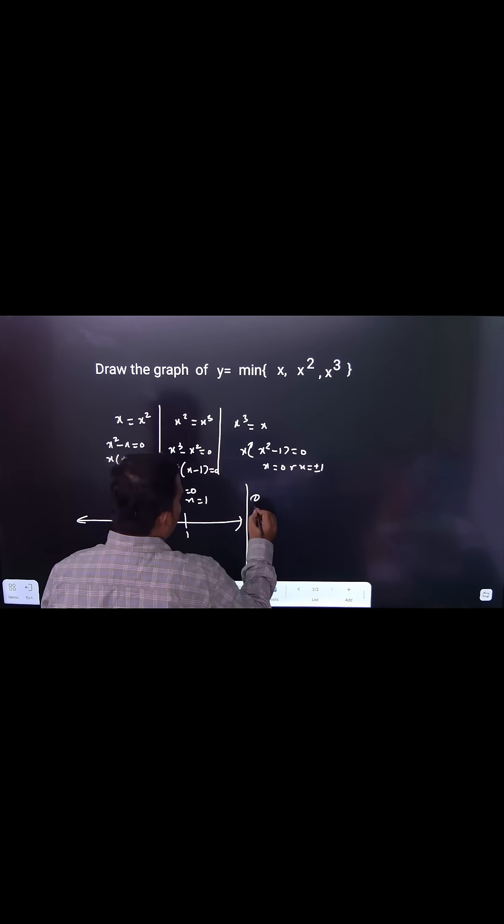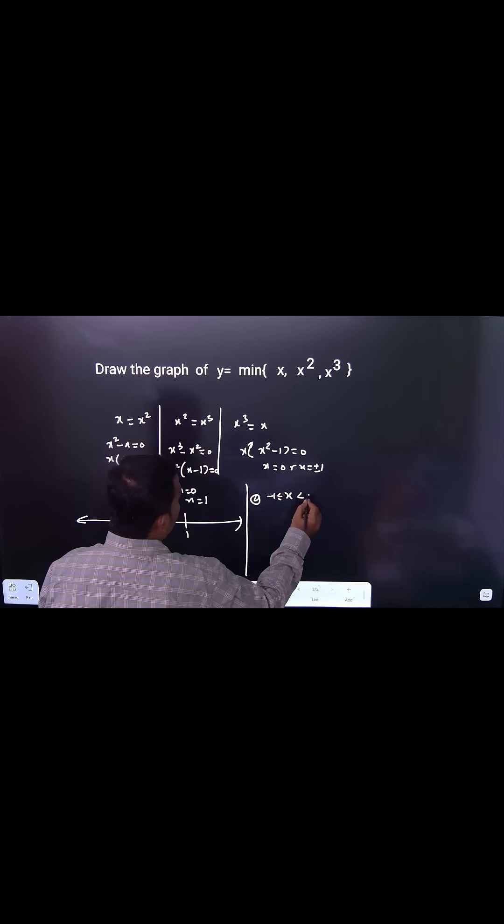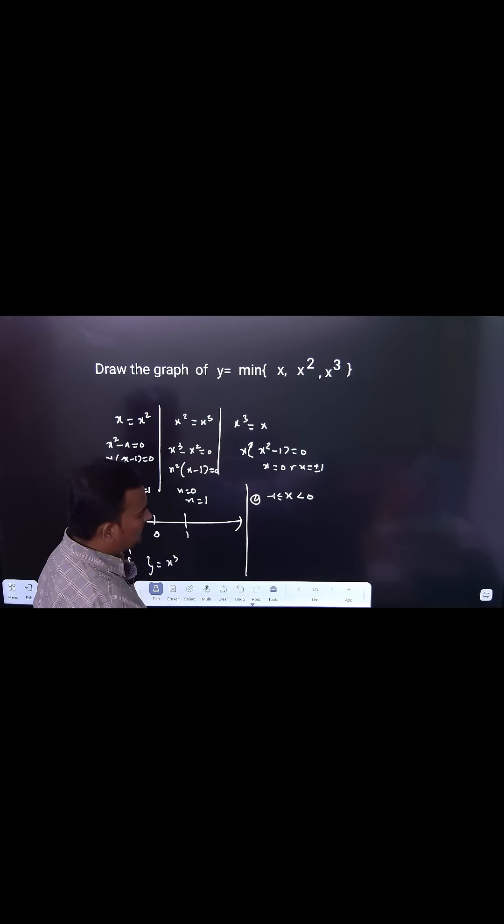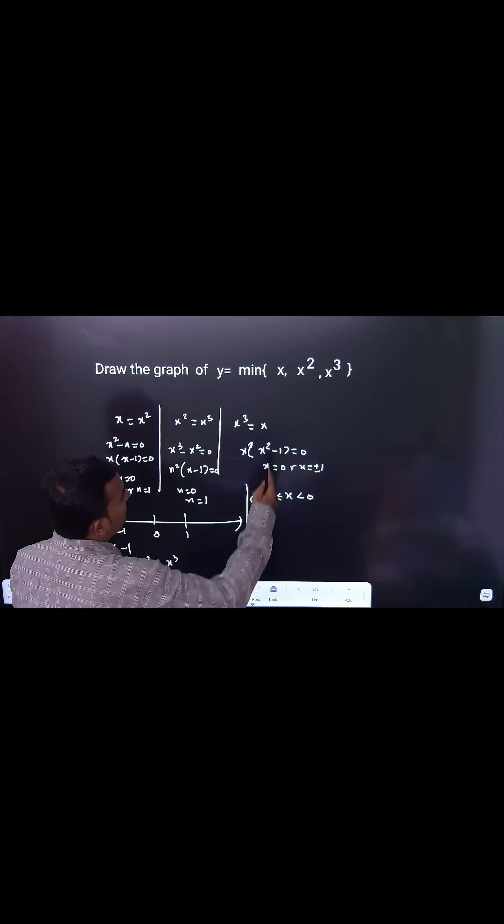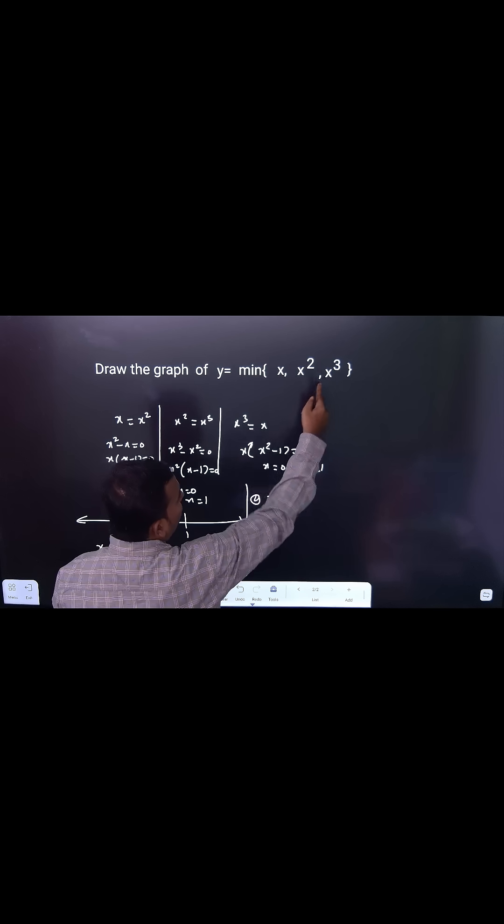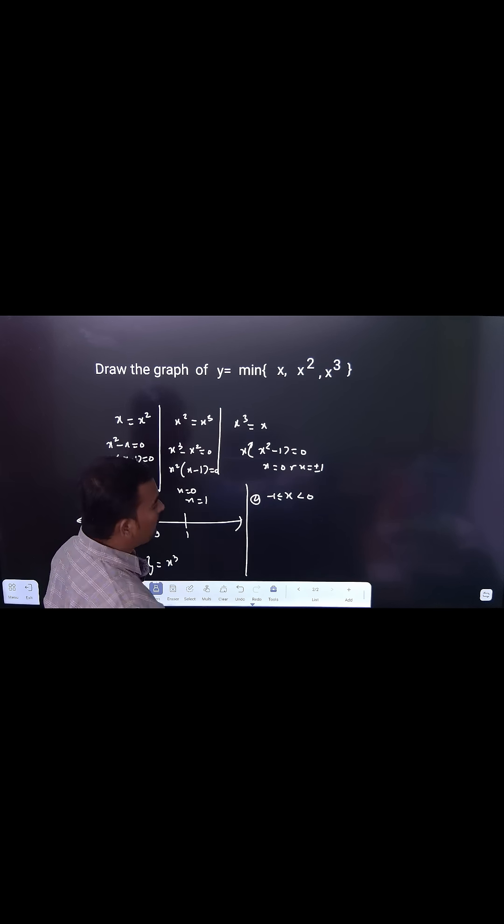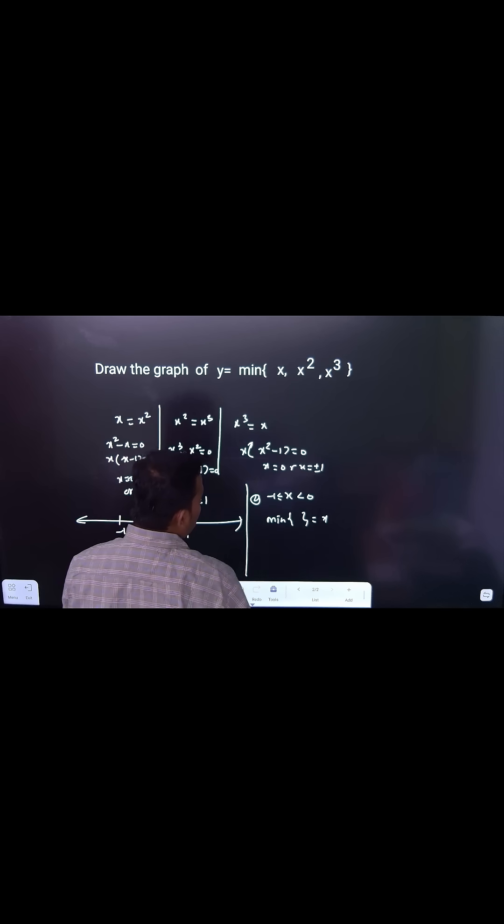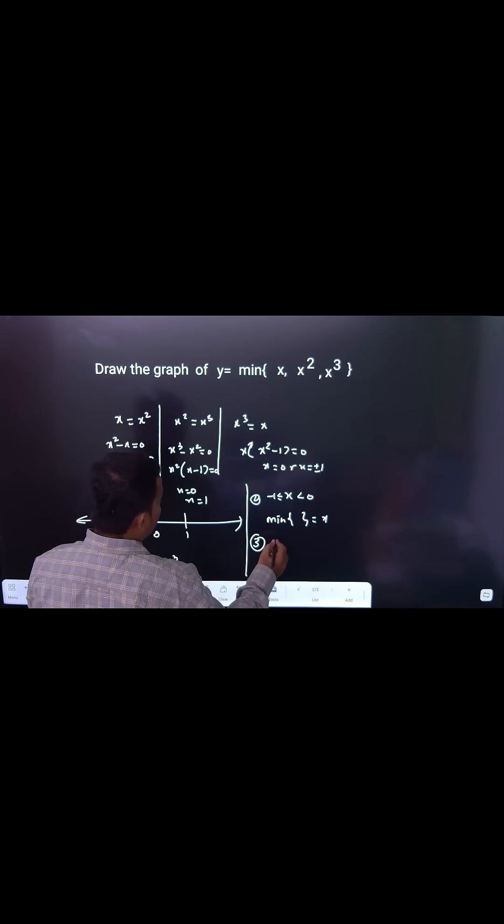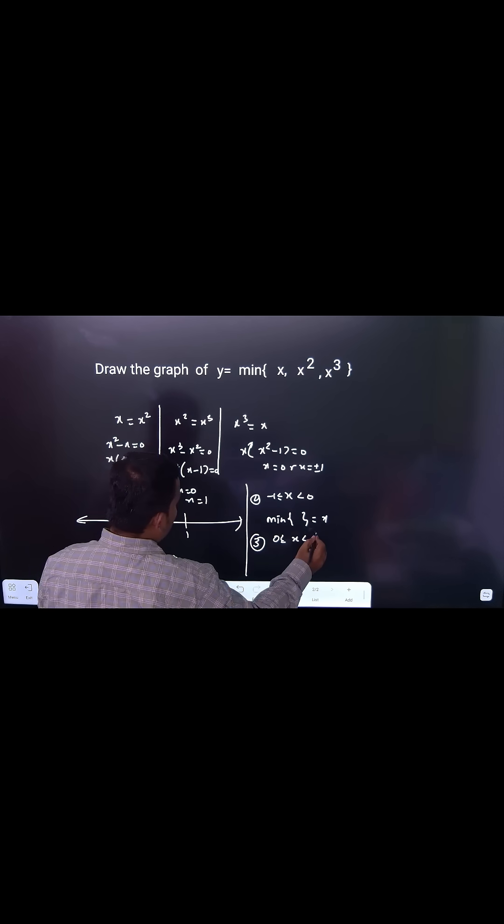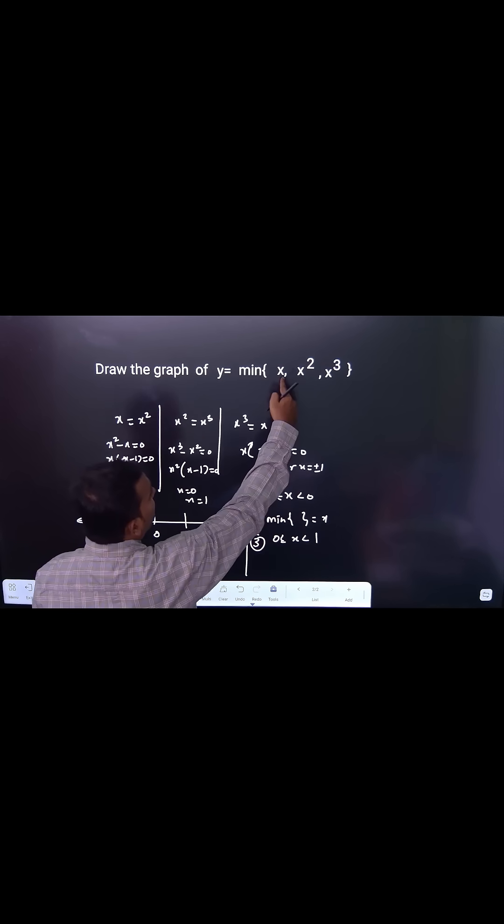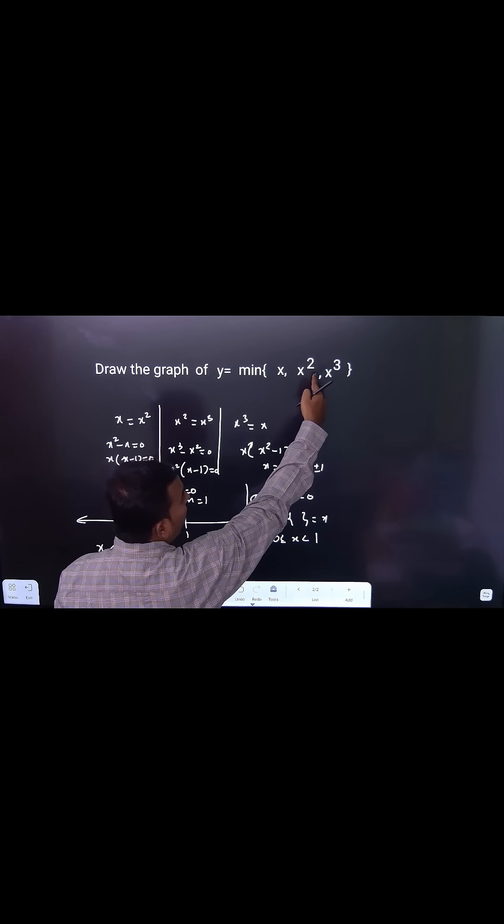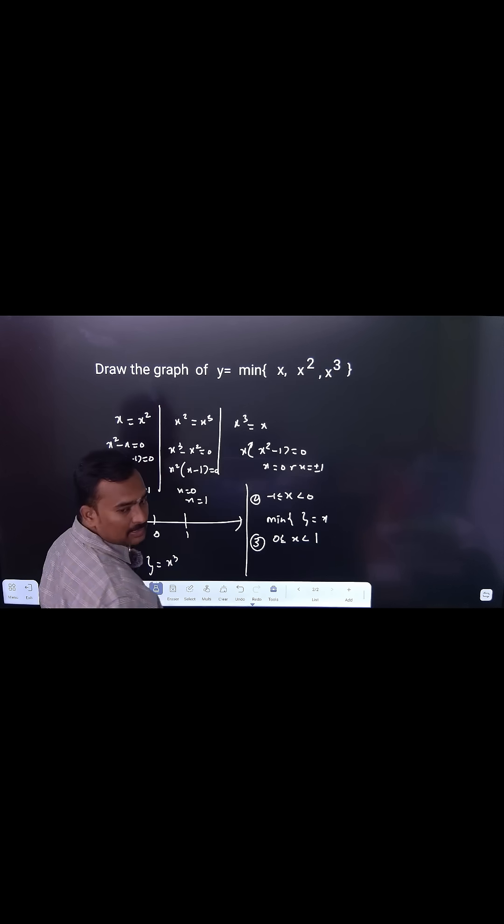Let's take the second case when x is minus 1 to 0. Let's take minus 1 by 2. If you take minus 1 by 2, plus 1 by 4, minus 1 by 8, which is the smallest here? X cube.